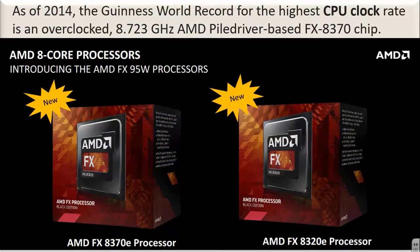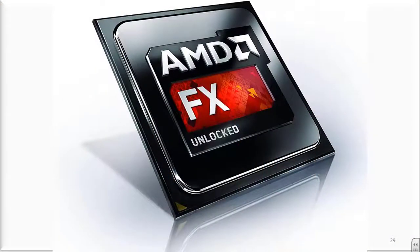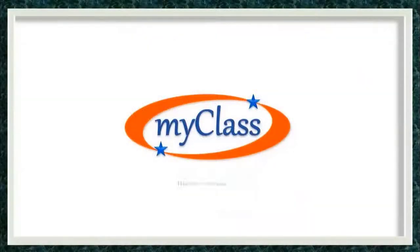As of 2014, the Guinness World Record for the highest CPU clock rate is an overclocked 8.723 GHz AMD Piledriver-based FX8370 chip. This is the fastest processor available at the time of recording of this particular video. Thank you very much.